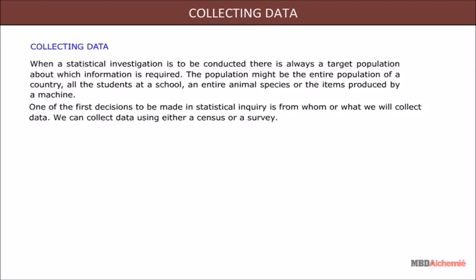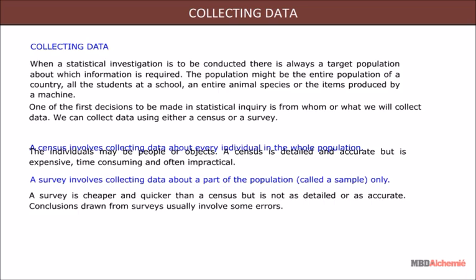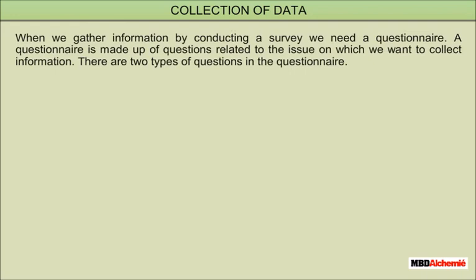We can collect data using either a census or a survey. A census involves collecting data about every individual in the whole population — the individuals may be people or objects. A census is detailed and accurate but is expensive, time-consuming, and often impractical. A survey involves collecting data about a part of the population called a sample only. A survey is cheaper and quicker than a census but is not as detailed or as accurate. Conclusions drawn from surveys usually involve some errors.